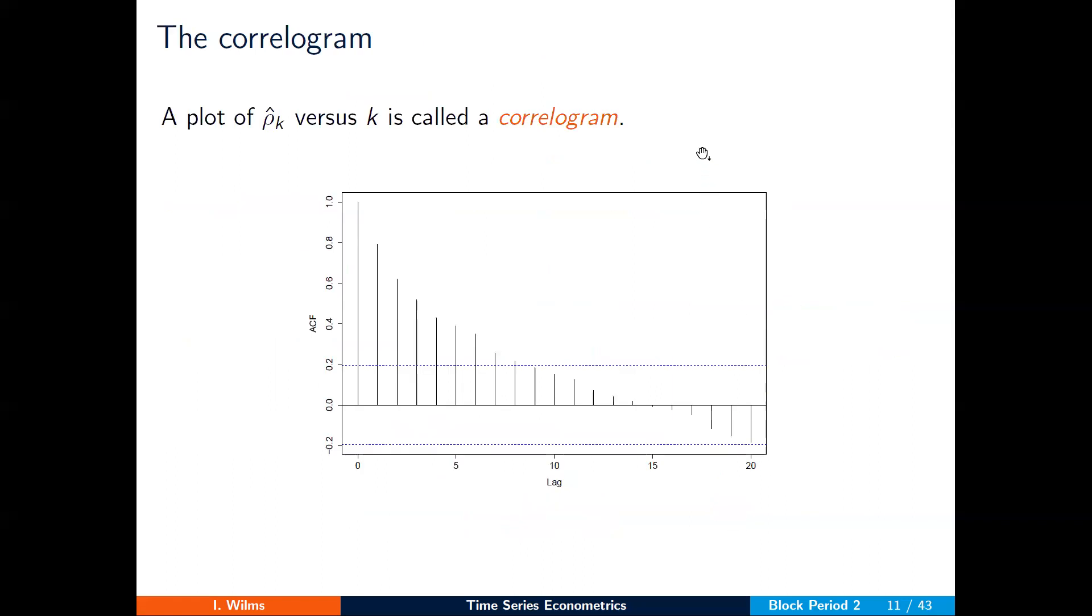The tool that will be helping us to inspect autocorrelations is the so-called correlogram. The correlogram is a plot of autocorrelations as a function of the lag or the order k.